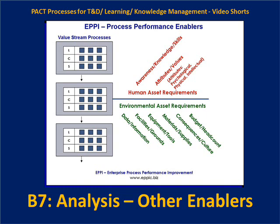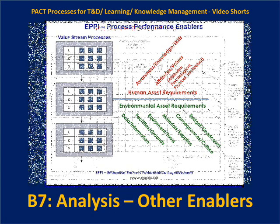Besides what the humans bring to the process, what else has to be there in the process — in the environment that the humans will manipulate and use as they do their task performance? That includes data, information, facilities and grounds, equipment, tools, material, supplies, culture, consequences, budget, and headcount — all the elements the environment needs to provide to truly enable the process to meet stakeholder requirements.